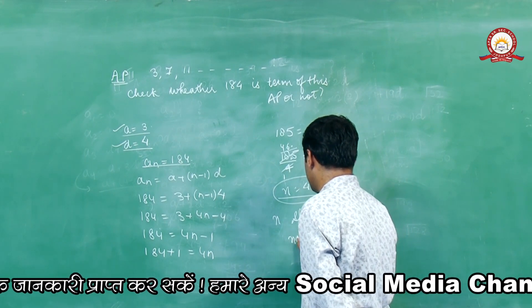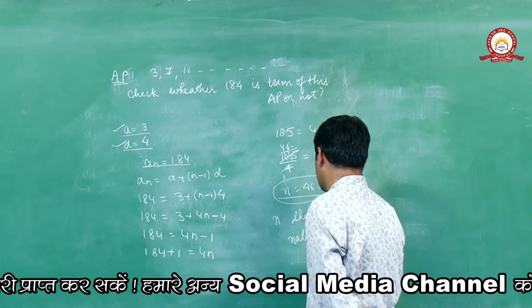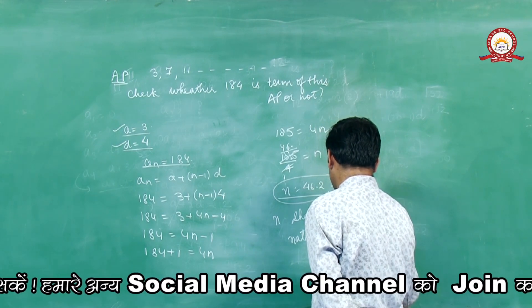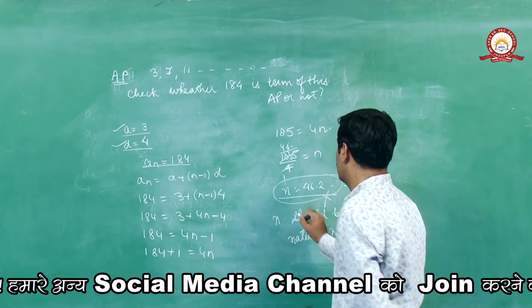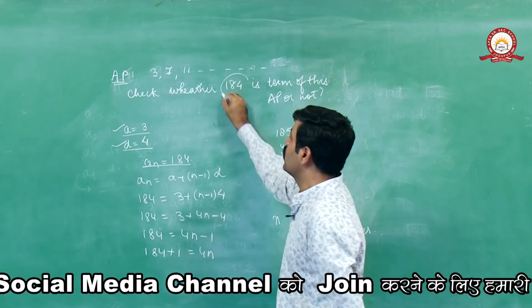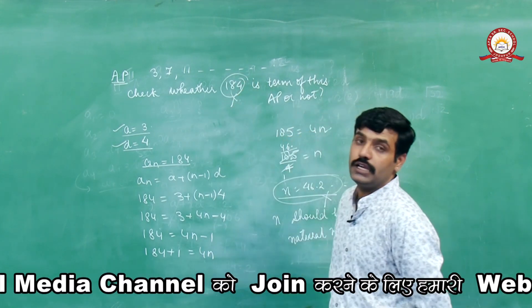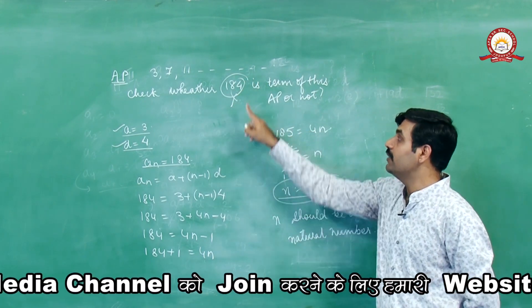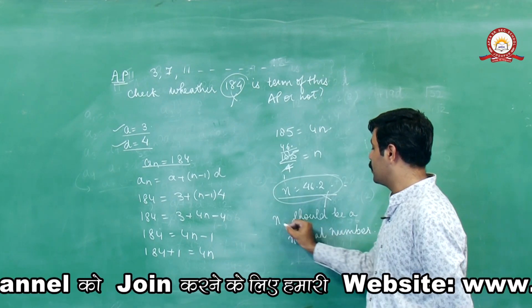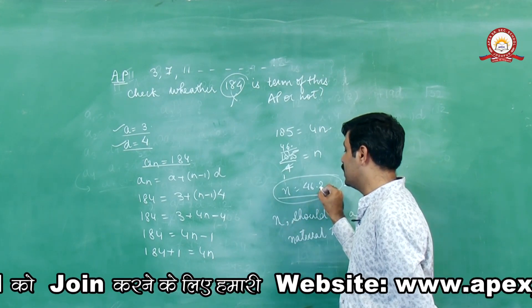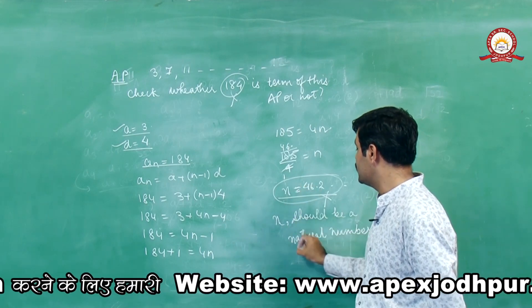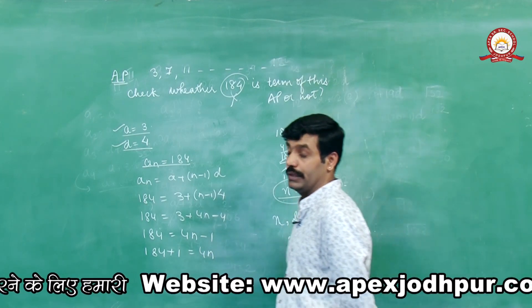N should always be a natural number। Since 185/4 = 46.25 is not a natural number, 184 is not a term in this AP।